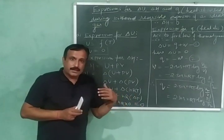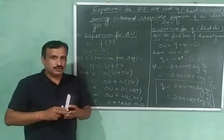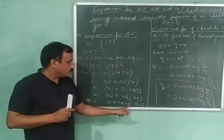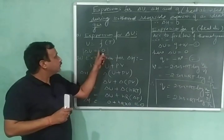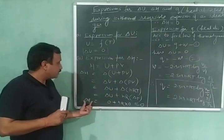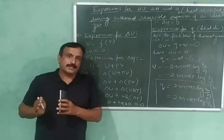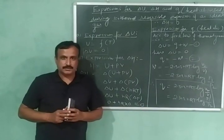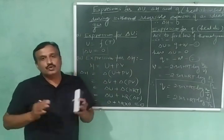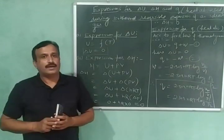Now, the process is isothermal, so temperature remains constant, meaning there is no change in temperature — delta T is equal to zero. And as proved earlier, delta U is also equal to zero. Therefore delta H is equal to zero during isothermal reversible expansion of an ideal gas, meaning there is no change in either internal energy or enthalpy.